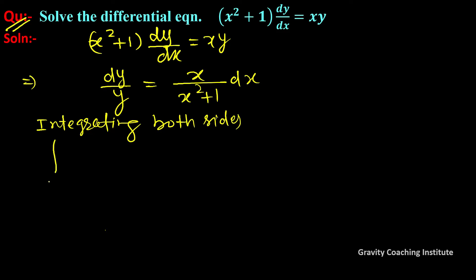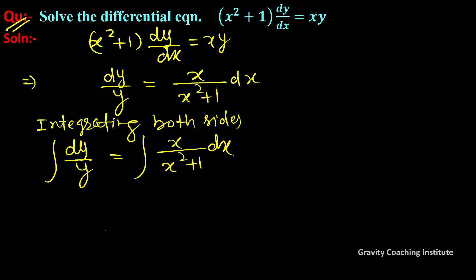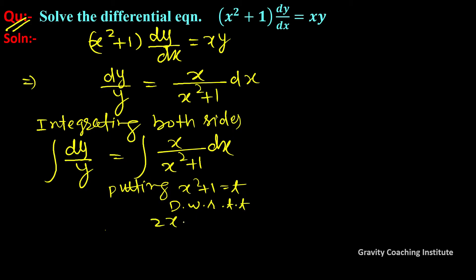Integration of dy/y gives log y. Now for the right side, we use substitution: let t = x² + 1, so differentiating, 2x dx = dt, which gives x dx = ½ dt.